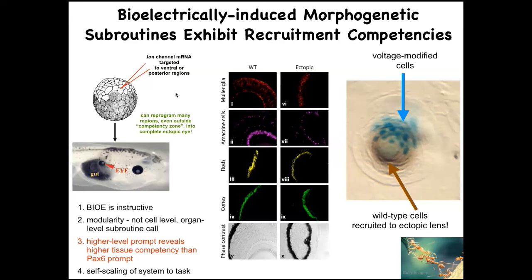Having seen the spot in the electric face that makes an eye, what happens if we introduce that pattern somewhere else? These patterns are basically spatial memories — the set point guiding morphogenesis. We can inject ion channel RNAs into a particular region to establish the voltage pattern, and that voltage pattern tells the local cells to build an eye. You can make an eye anywhere in the animal, including out of gut cells. Section these eyes and they can have all the right lens, retina, and optic nerve.